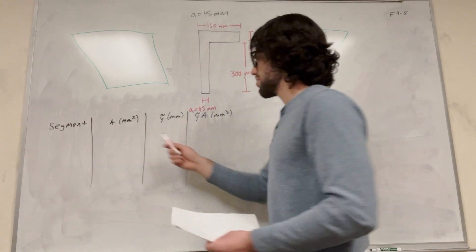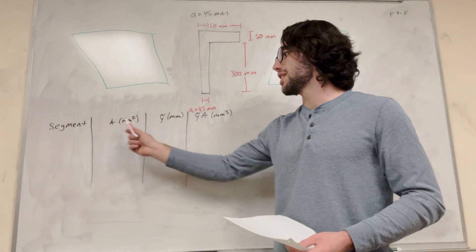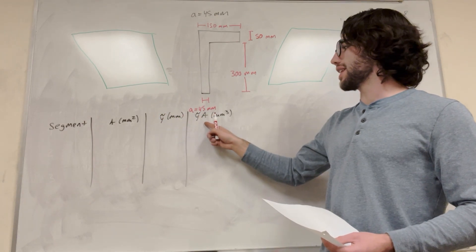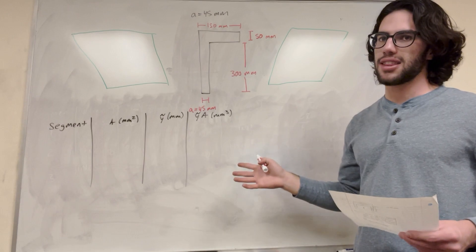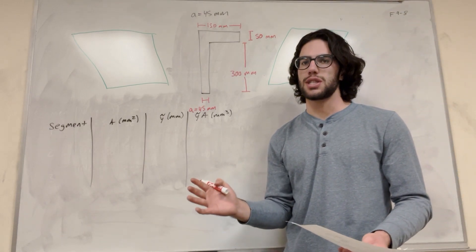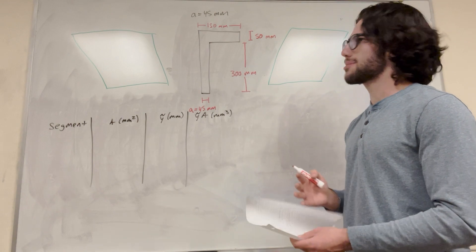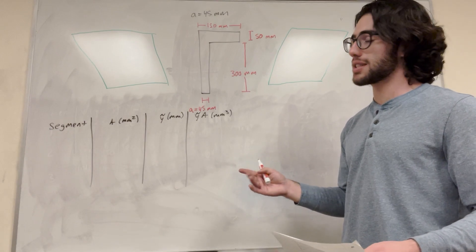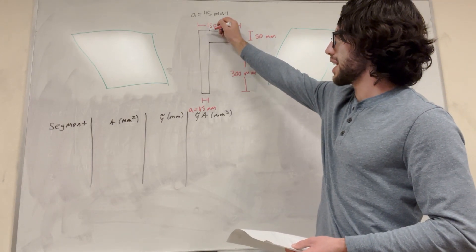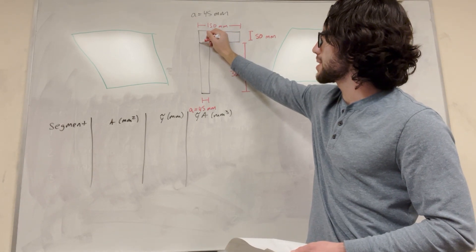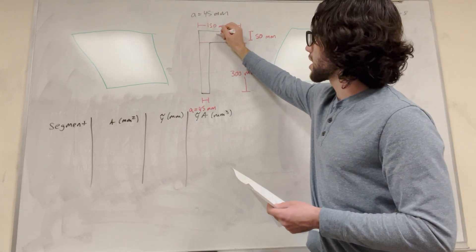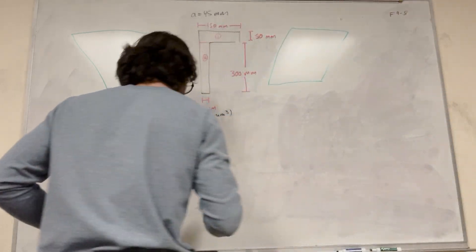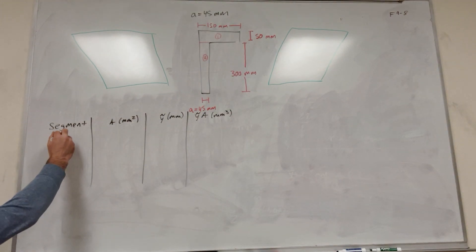So I drew this table here. We have segment, area, y tilde, which is the center of mass of each segment, and then y tilde times area, which is just something we're going to calculate to make math easier. So we want to break this into two segments or as many segments as we think we need to make it all simple shapes. In this case, I think it's just going to be two segments. One way you could do it is you could divide it like this, or you could divide it like this. I'm going to divide it like this because it's going to make things a little easier. We're going to label this segment one and label this segment two.